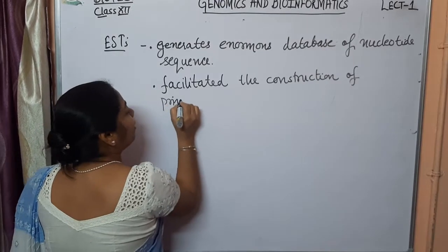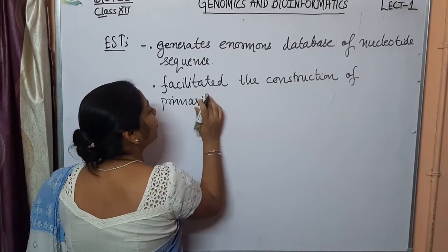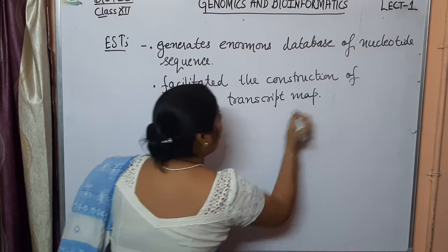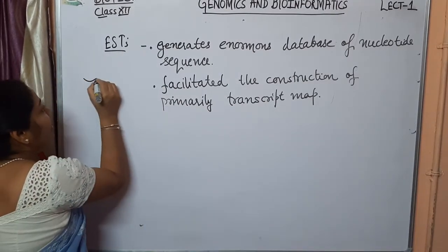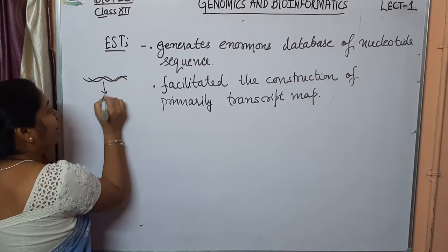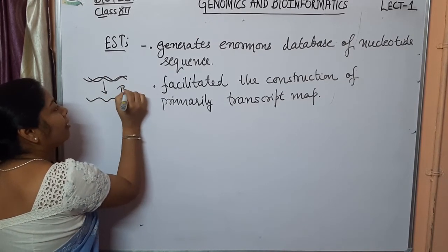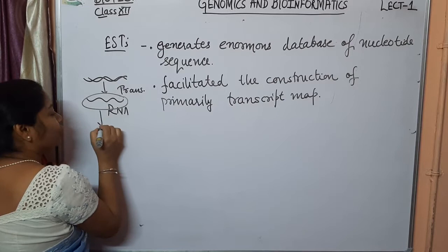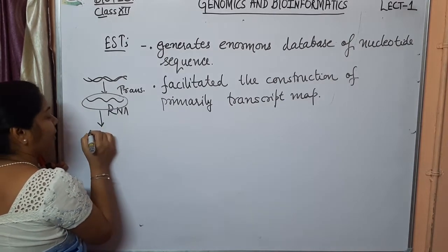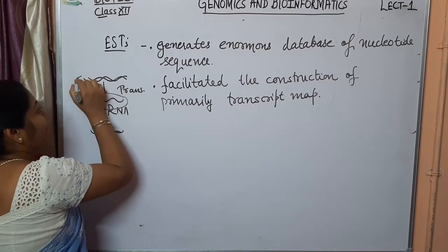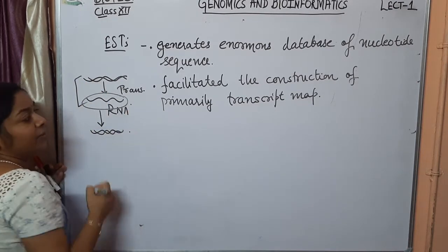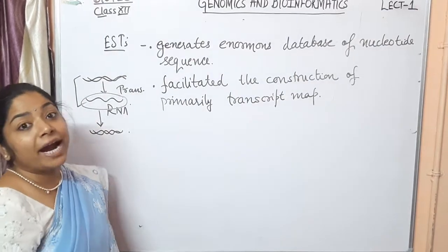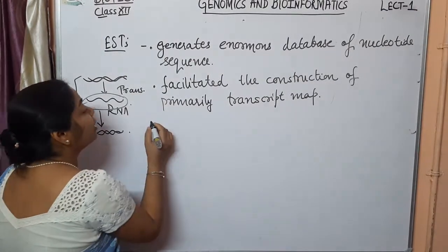The second benefit was that it facilitated the construction of a primary transcript map. It is called a primary transcript map because DNA in the body produces RNA through transcription. The mRNA was taken from the body, converted back into DNA outside the body, and from this the sequence was built — giving us the primary transcript map. Additionally, it provided the feasibility of high-throughput gene discovery.